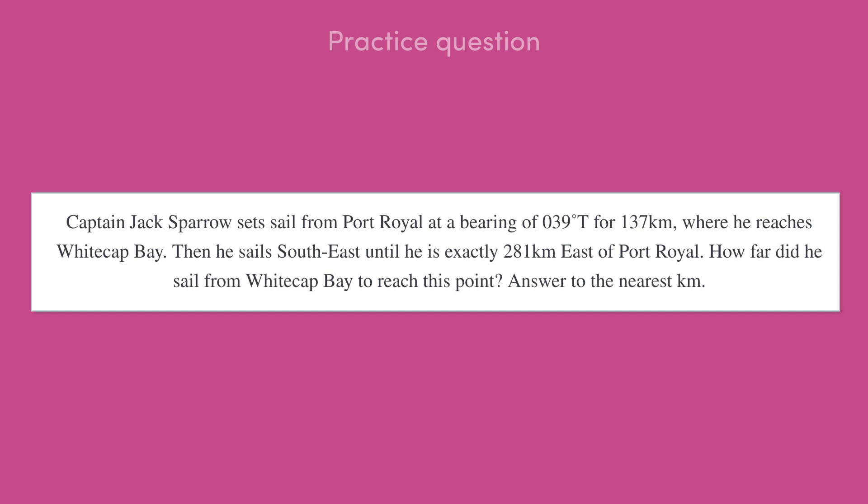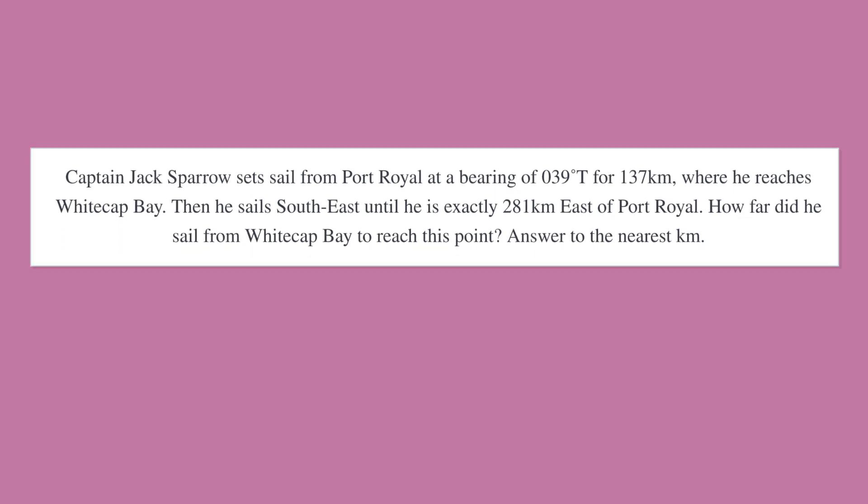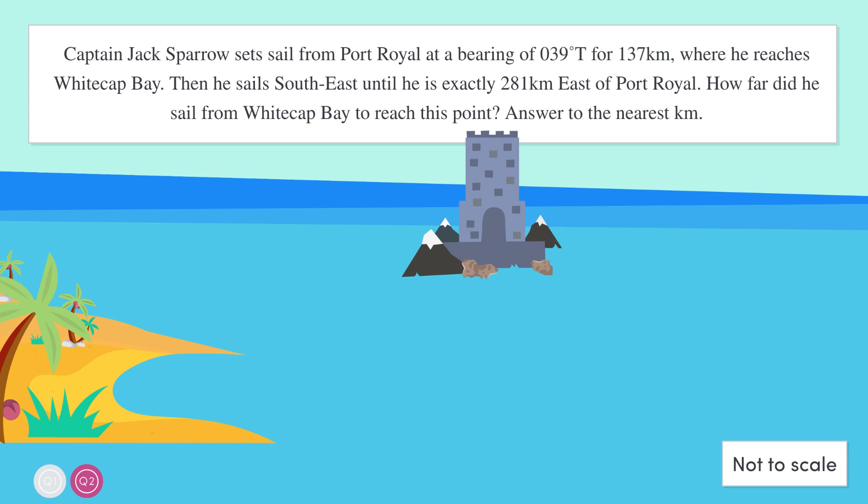Okay, this seems like a pretty confusing question at first. But as we know, drawing a diagram always helps so much. So let's map out Jack's course. He starts at Port Royal and then sails at a bearing of 39 degrees true, which is in this direction, for 137 kilometers. Here, he arrives at Whitecap Bay.